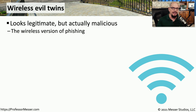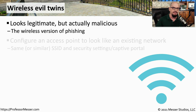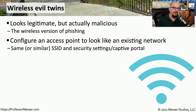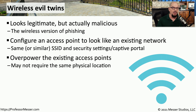A wireless evil twin has a similar function to a rogue access point, but a wireless evil twin is intentionally malicious. They are trying to get you to connect to this wireless network in an effort to either gather details from your computer or phish you for information. This is commonly accomplished by creating a new access point but configuring that access point to look very similar to the existing access points on that network, so it might have the same or a similar SSID, and the security settings may look very similar to what already exists on your network. If this wireless evil twin has a very strong radio signal, it could even overpower the existing access points, effectively becoming the primary access for wireless connectivity.